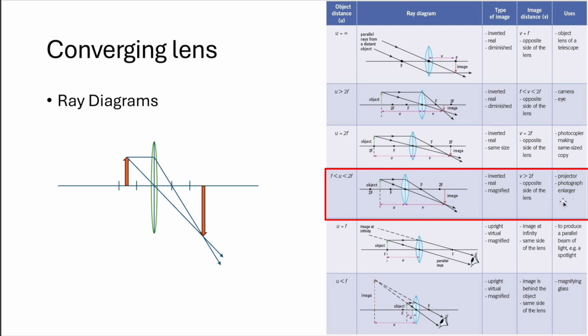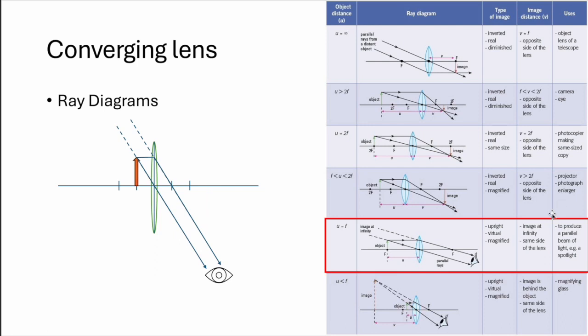If an item is at point F, then you will get a parallel line straight after the lens. This will give you an upright image, virtual magnified image. Virtual means the item cannot be cast, so the uses will be this.